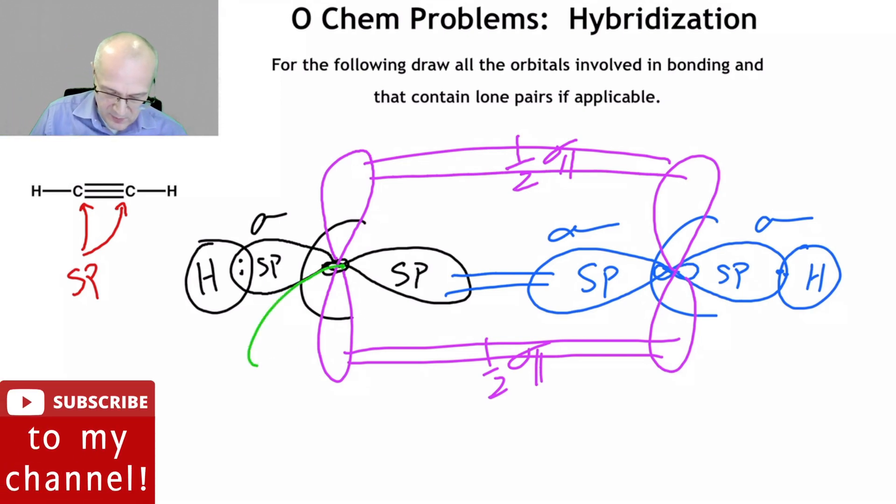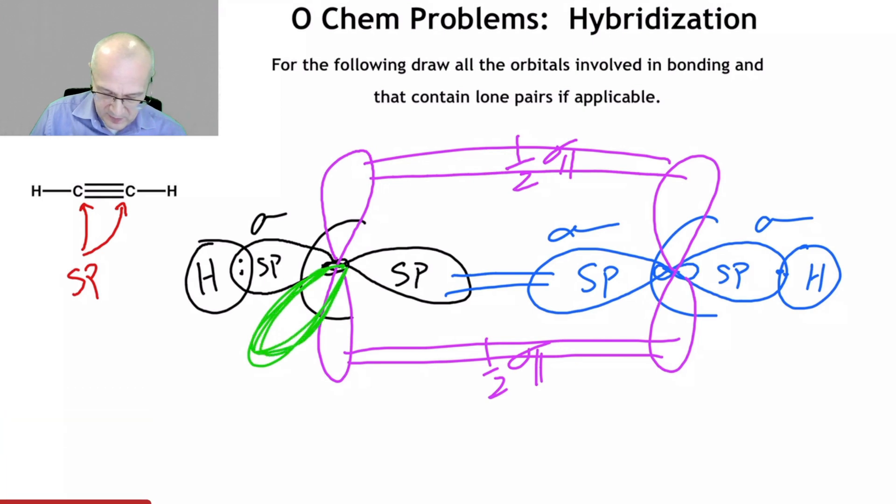So there's going to be a p orbital that's coming out this way. Now I'm drawing it nice and heavy, because it's coming towards me. I'm drawing this one as a dash, because it's going back away from me. Now I don't expect anyone in my class, and I'm sure your professors don't either, to be Picasso or Rembrandt or some amazing artist.